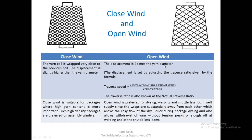The displacement in open wind is set by adjusting the traverse ratio given by a specific formula. If we are able to set the traverse ratio accordingly, we can easily make an open-wind package. The traverse speed equals 2 times the traverse length times RPM of drum, divided by traverse ratio. The traverse ratio is also known as the actual traverse ratio. Closed wind is suitable where high yarn content is very important — more than the density of the package. Such high-density packages are preferred on assembly winders where we want the package to last longer.